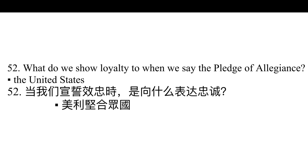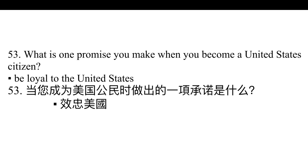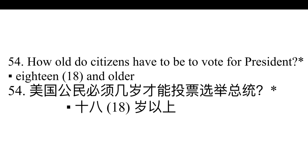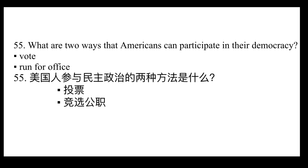What do we show loyalty to when we say the Pledge of Allegiance? The United States. What is one promise you make when you become a United States citizen? Be loyal to the United States. How old do citizens have to be to vote for president? 18 and older. What are two ways that Americans can participate in their democracy? Vote. Run for office.